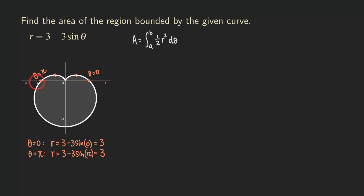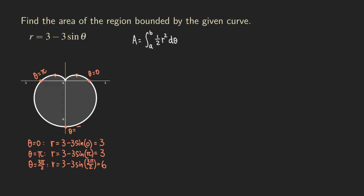We can plug in a few more values. Let's try theta equals 3π/2, which is in the direction of the negative y-axis. We have r equals 3 minus 3 times sine of 3π/2. Sine of 3π/2 is negative 1, so we get 3 minus negative 3, which gives positive 6. Starting from the origin going in that direction, we go down 6 units. So that point corresponds to theta equals 3π/2.